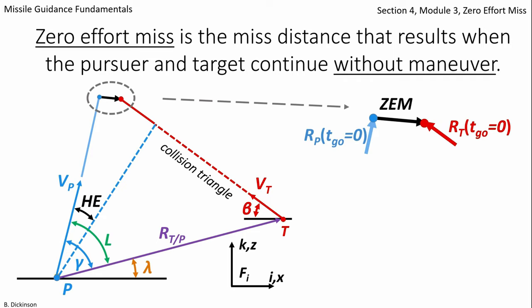It's zero effort miss in particular because the pursuer did not accelerate at all to correct the heading error. It simply went along its current trajectory.